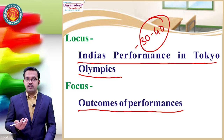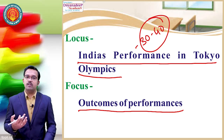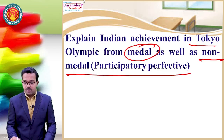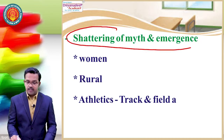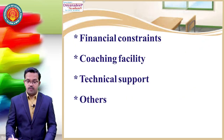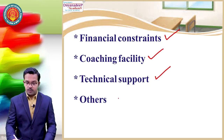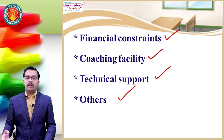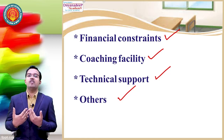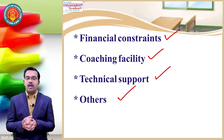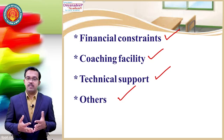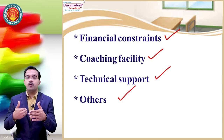While explaining the outcome of the performances, they have straightforwardly asked: is India rising as a sporting nation? Explain India's achievements in Tokyo Olympics from both medal and non-medal participatory perspectives. Then explain how it is shattering myths — women medal winning, rural medal winning, athletics and track and field. Financial constraints, coaching facilities, technical support, and others must be mentioned. What proportion of people are bringing medals relative to India's population? What money is being spent on sports? What strategy should we have? Is India rising as a sporting nation? If yes, how and why? If no, how and why? Every point must be explained and linked with sporting culture in India.